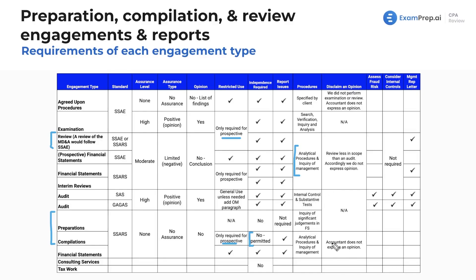For disclaiming an opinion: in a compilation the accountant doesn't express an opinion — there's nothing to disclaim. In a review, you state that a review is less in scope than an audit, and accordingly you do not express an opinion. That is the language used when disclaiming. Assessing fraud risk is only done during an audit.